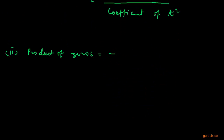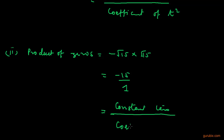Now we find the product of zeros: minus square root of 15 into positive square root of 15 equals minus 15, which we write as minus 15 over 1. This ratio equals the constant term over the coefficient of T squared. So both relationships are verified. Thank you.